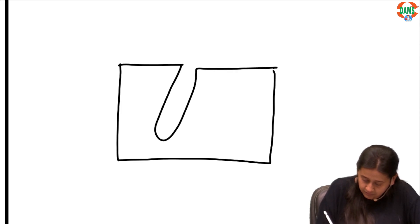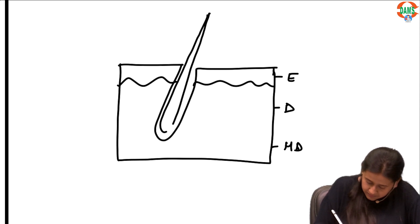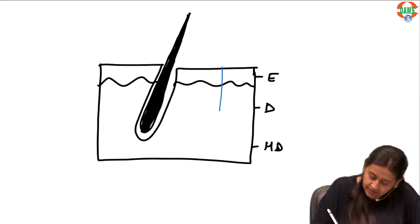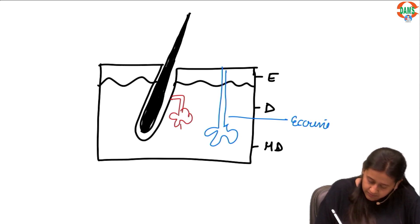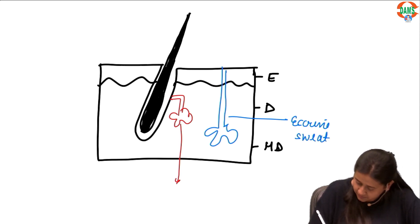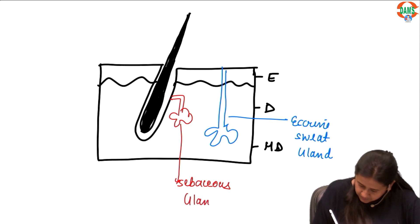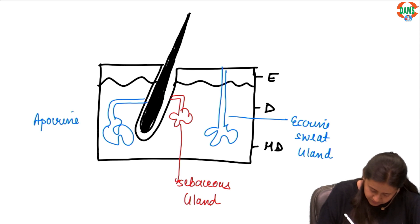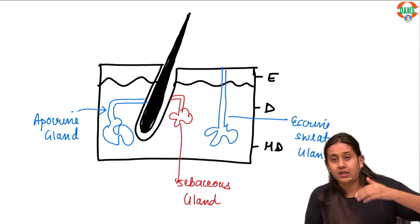To understand this, remember that the skin has a hair follicle, epidermis, dermis, and hypodermis. There are three glands present in our skin. First is the eccrine gland, which opens directly onto the surface of the skin. Then there is the sebaceous gland, which opens into the hair follicle. And then there is the apocrine gland, which also opens into the hair follicle, while the eccrine gland opens directly onto the surface of the skin.